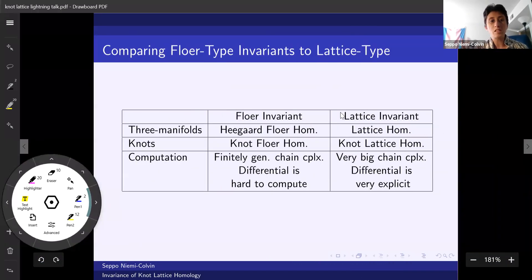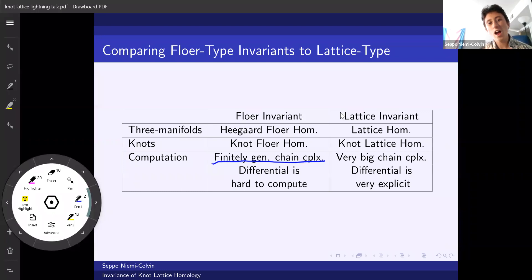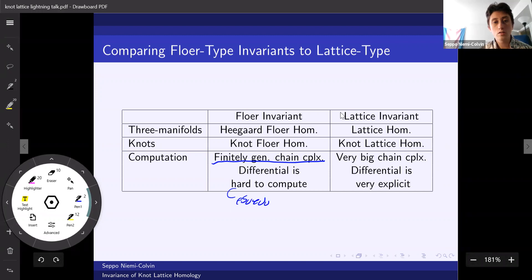We care about these because of how they affect computation. The Floer side has finitely generated chain complexes, which is good. We like finite. However, the differential is hard to compute because it involves pseudo-holomorphic curve counts.